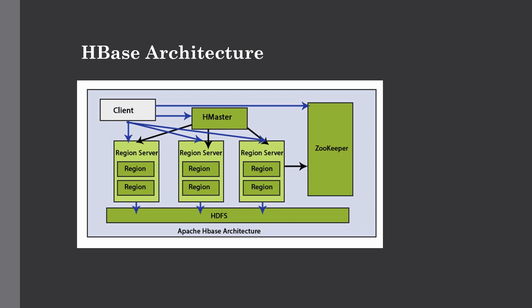In the Hadoop ecosystem, we have data nodes and the name node, where the name node communicates with data nodes and manages load balancing. Similarly, HMaster acts like a name node — it assigns regions to region servers, maintains the state of the cluster by negotiating load balancing, and is also responsible for schema changes such as creation of tables and column families.